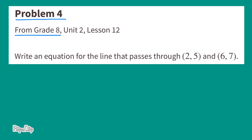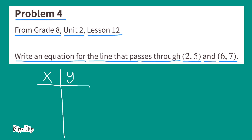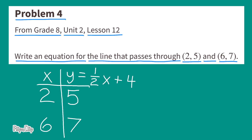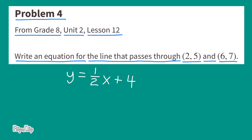Problem number four, from 8th grade, Unit 2, Lesson 12. Write an equation for the line that passes through coordinates (2, 5) and (6, 7). Making a chart with x and y values — for x equals 2, y equals 5; for x equals 6, y equals 7. Since half of 2 plus 4 equals 5, and half of 6 plus 4 equals 7, the equation is y equals one-half x plus 4. Another form is: (y minus 5) divided by (x minus 2) equals one-half.